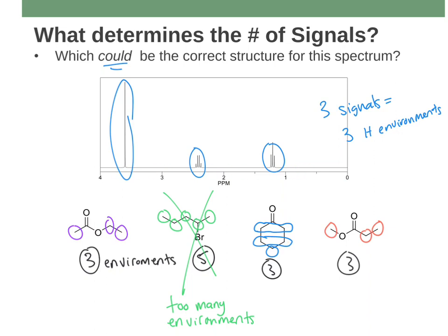So how do we tell which of those three remaining molecules is the correct one? One of them is right. In order to answer that question, we need to take a deeper look — we need to look at the integrals, the splitting patterns, and the chemical shifts. Those will be covered in the following videos. Keep it up, watch the next video, and good luck.